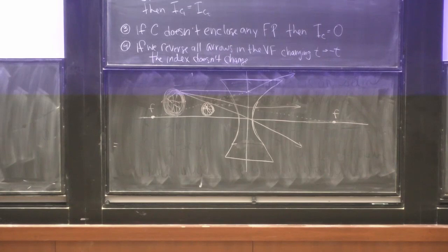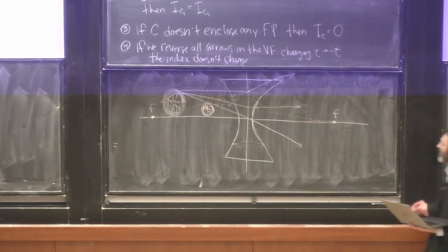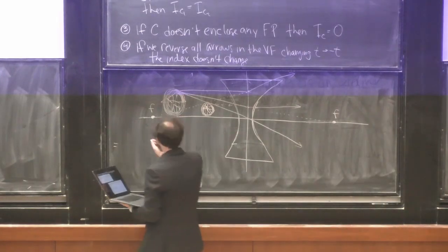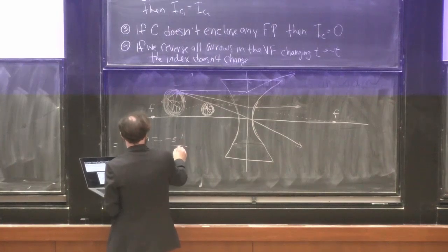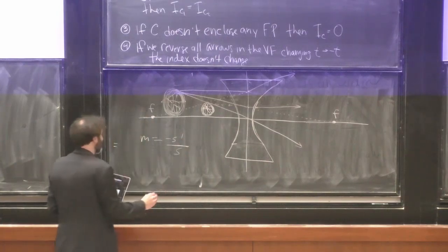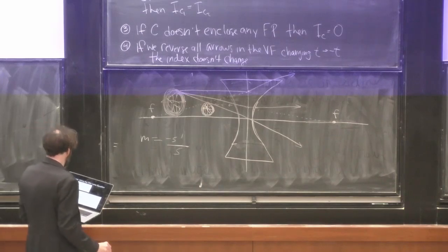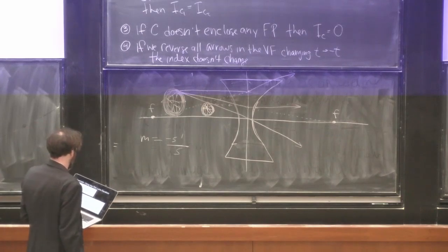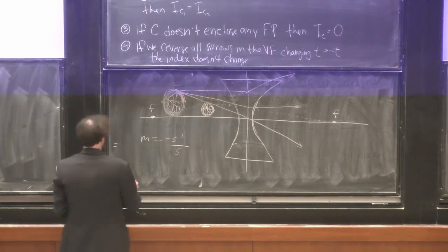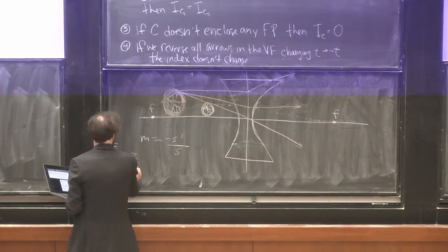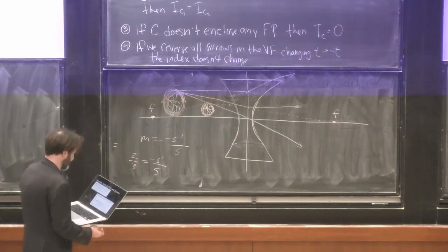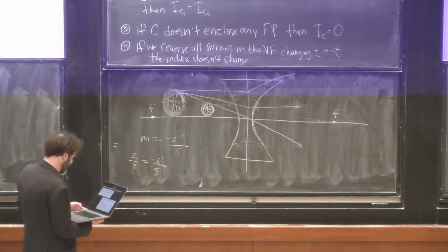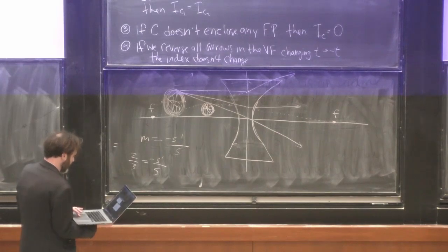So we've got our image here, and we know the relationship for magnification. Magnification M equals negative S prime over S. We know the magnification is two-thirds, so we have: two-thirds equals negative S prime over S. We can use that to solve for the image distance.